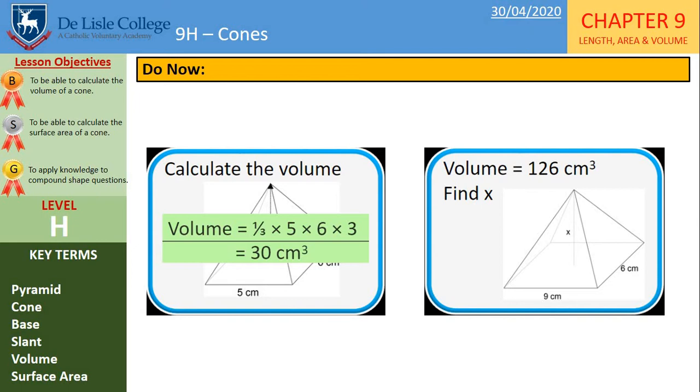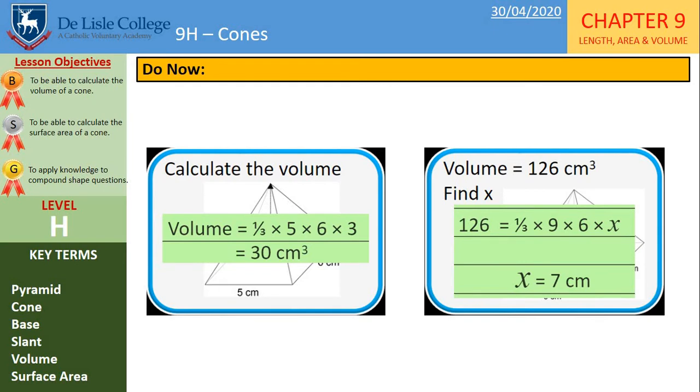OK, the answers then. The first one is 30 centimeters cubed. And the second one, we're working at the height. So we substitute what we know and then solve the equation and we get x equals 7 centimeters.